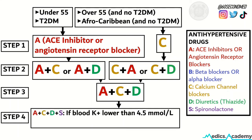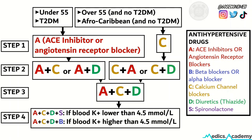If the blood potassium is lower than 4.5, we add spironolactone. And if blood potassium is higher than 4.5, we add a beta blocker or an alpha blocker.